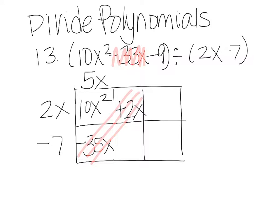So then I have to ask myself, 2x times what is 2x? The answer to that is 1, so I put 1 up above. Then I multiply that 1. 1 times negative 7 is negative 7.